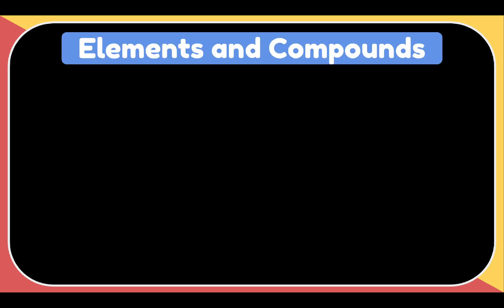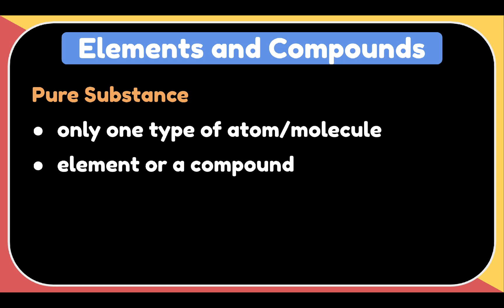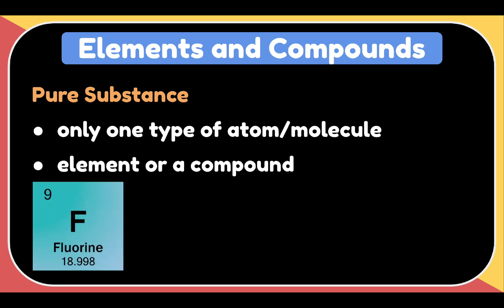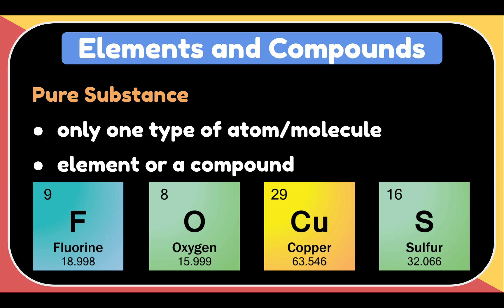Now, atoms are usually classified as elements, also known as pure substances. A pure substance is made up of only one type of atom, or one type of molecule. A pure substance can be either an element or a compound. So, fluorine, oxygen, copper, sulfur are all examples of pure substances.